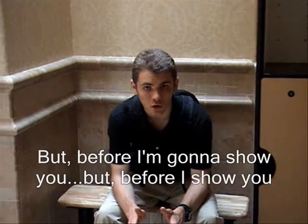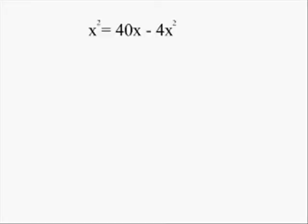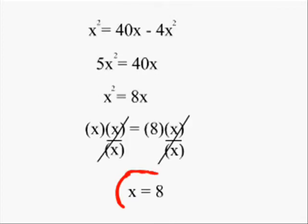Before showing completing the square, let's look at how he solved the quadratic equation. For the equation x squared equals 40x minus 4x, he would add 4x to both sides and get 5x squared equals 40x. Next, he would divide both sides by 5 and get x squared equals 8x. Then he would factor out the x, so x times x equals 8 times x, and the solution would be x equals 8.